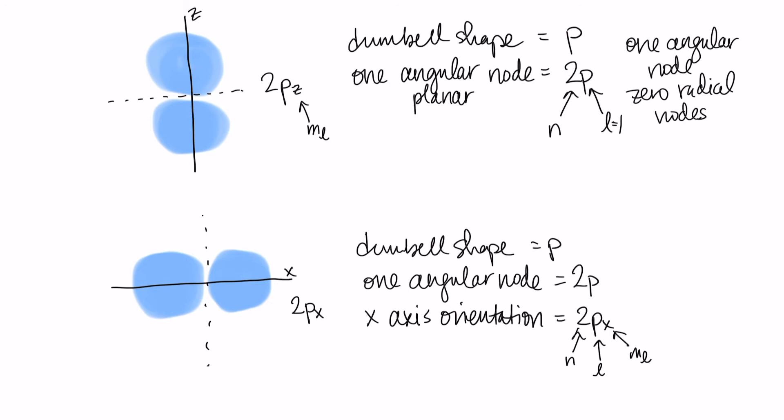Now for this class we're not going to ask you to assign quantum numbers associated with the x, y, or z orientation. Rather to simply know that there are three possible orientations. So because my l is 1, my m sub l value could be minus 1, 0, or 1. These are all allowed. And that's why we have three different orbitals: 2pz, 2px, and 2py.